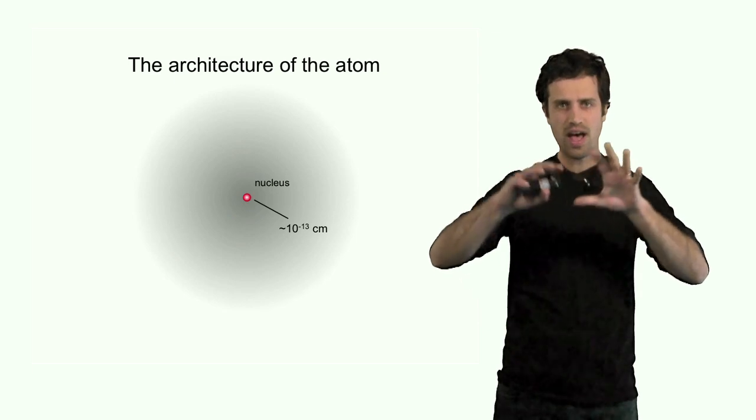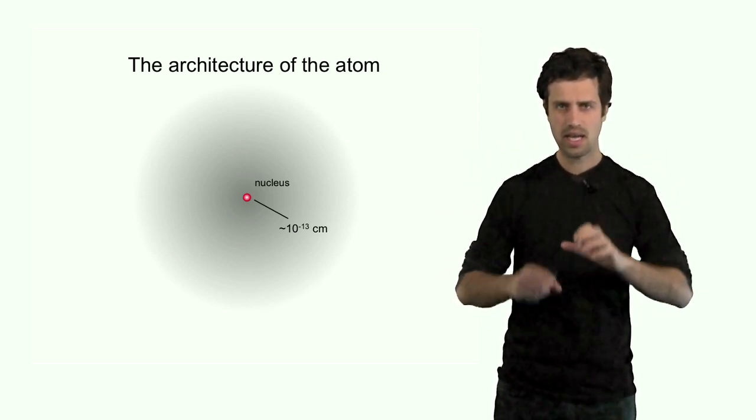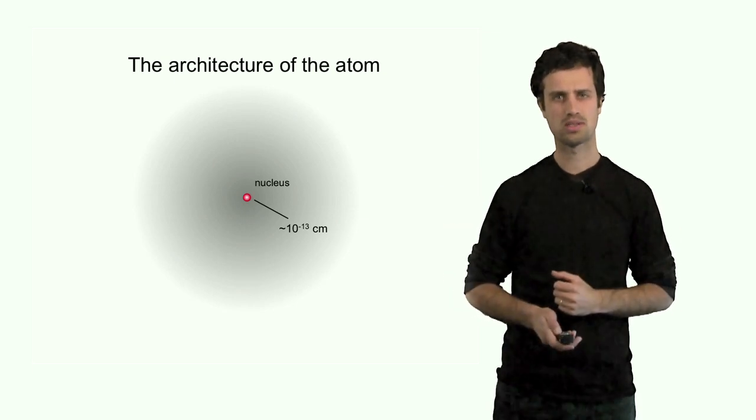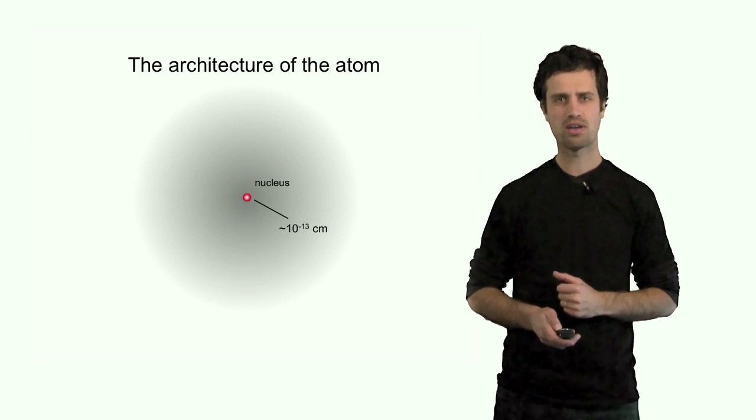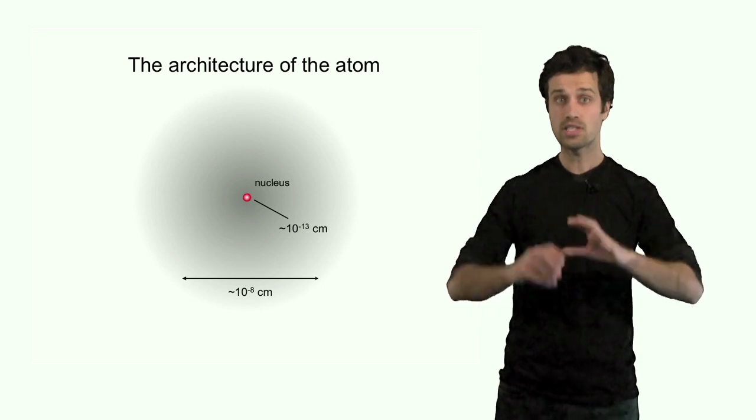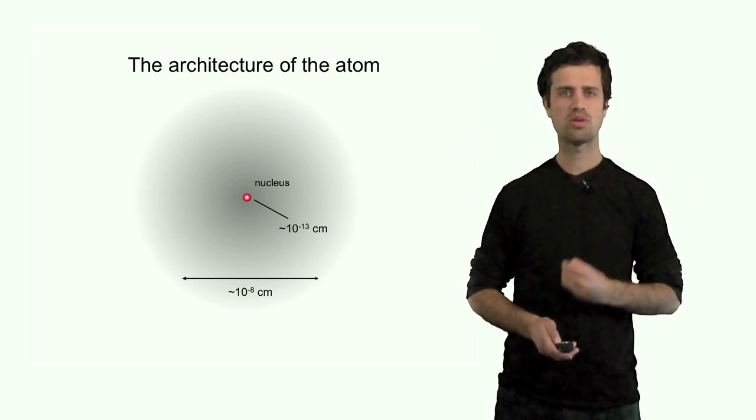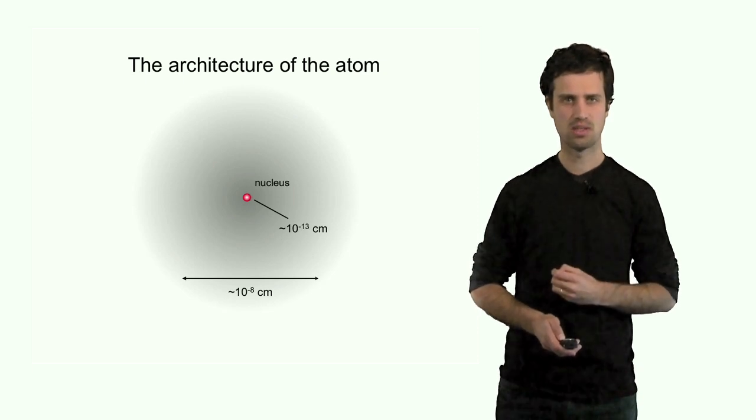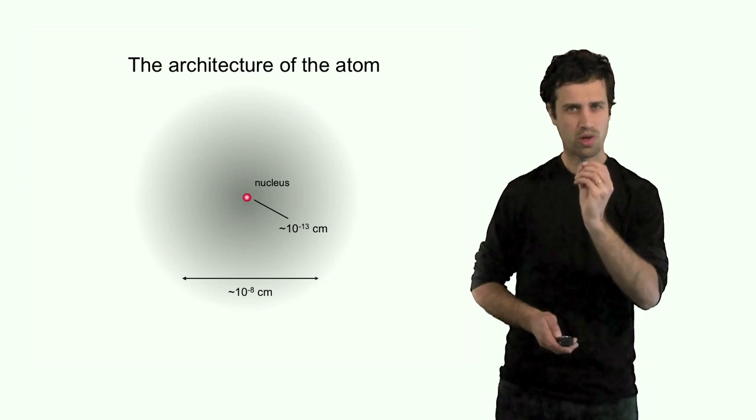The atom is defined by the location of the electrons. The electrons are floating around the nucleus. And the amount of space they occupy sets a mark for the size of the atom. The size of the atom as a whole, as defined by the locations of those electrons, is on the order of 10⁻⁸ centimeters, which is indeed a lot larger than the size of its core, the nucleus.